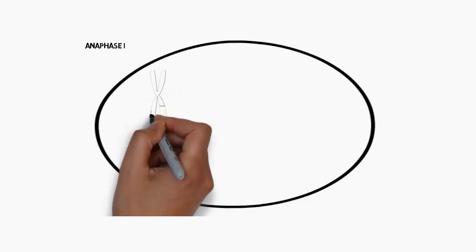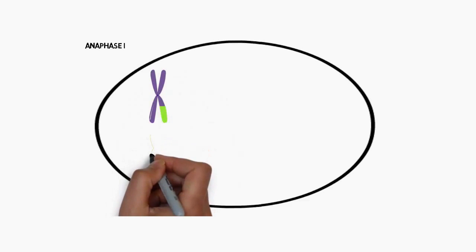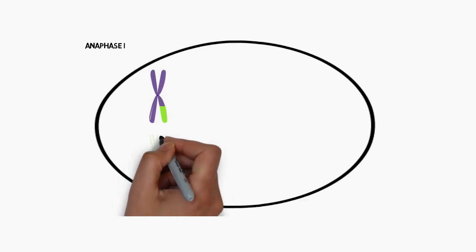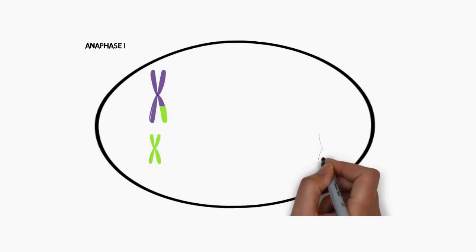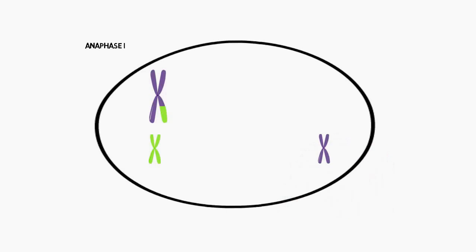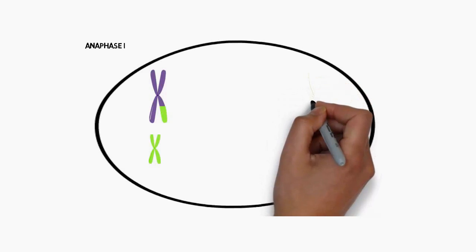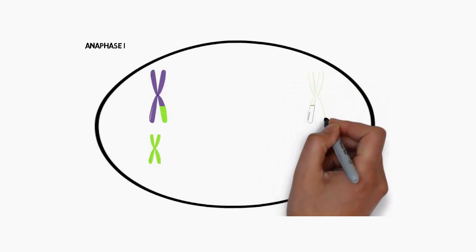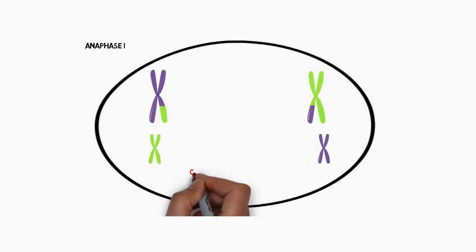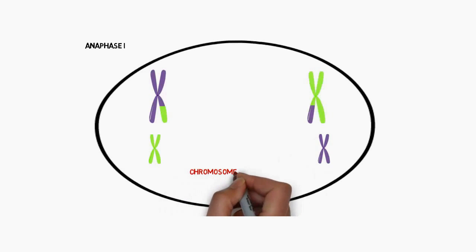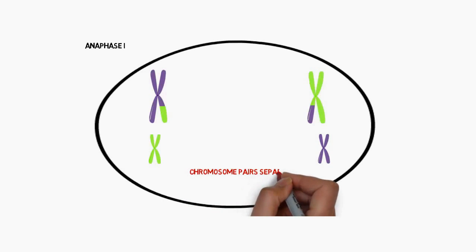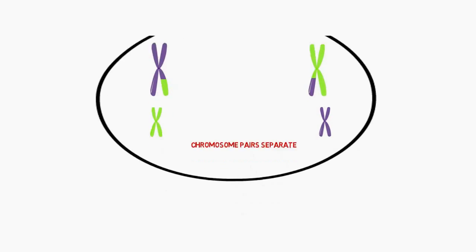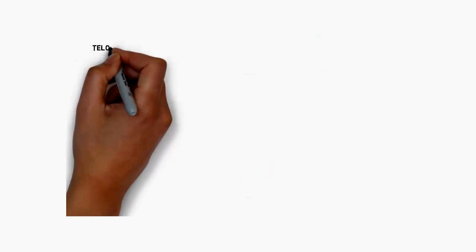In anaphase one, we can see that the chromosomes have been brought further apart. In animal cells it is the centrioles — cell organelles — which produce the spindle fibres. These spindle fibres attach to the centromeres that join the chromosomes together and pull them away from each other, so homologous pairs are brought away from each other.